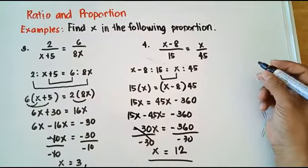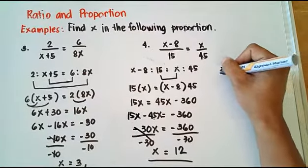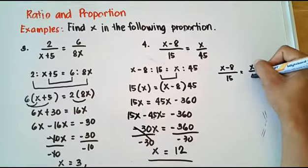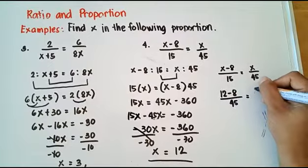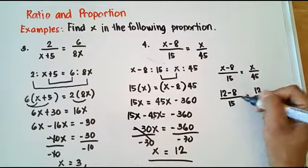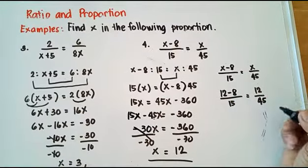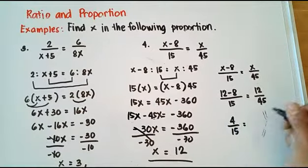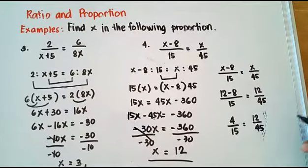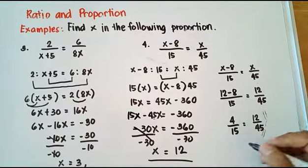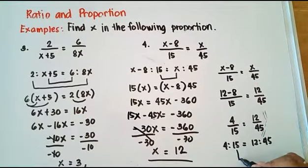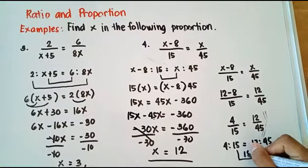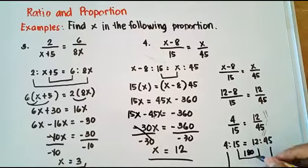Checking if x is correct: (x minus 8) over 15 equals x over 45. Since x is 12: (12 minus 8) over 15 equals 12 over 45. That is 4 over 15 equals 12 over 45. Writing as 4 is to 15 is equal to 12 is to 45: 12 times 15 is 180. Then 4 times 45 is also 180. Verified.